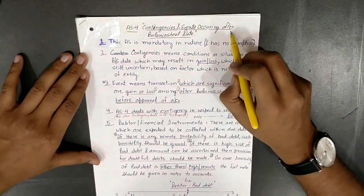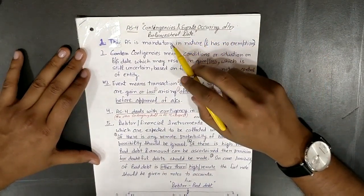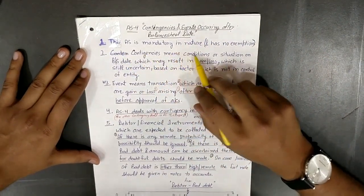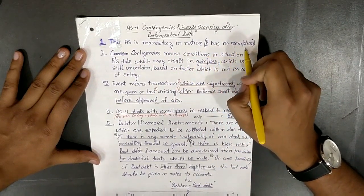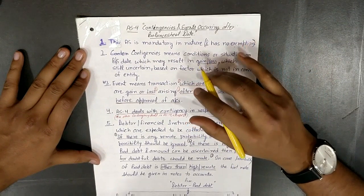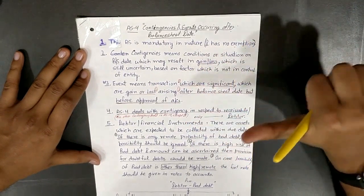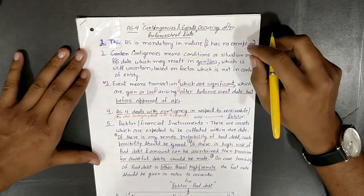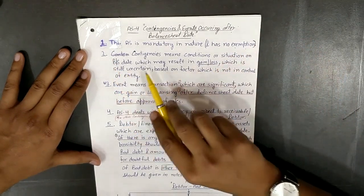Contingencies and events occurring after balance sheet date. This AS is mandatory in nature and has no exemption. For checking which AS has exemption or not, please check the framework of accounting standard video. The link will be in the description.